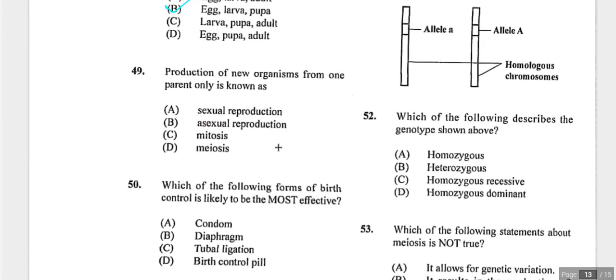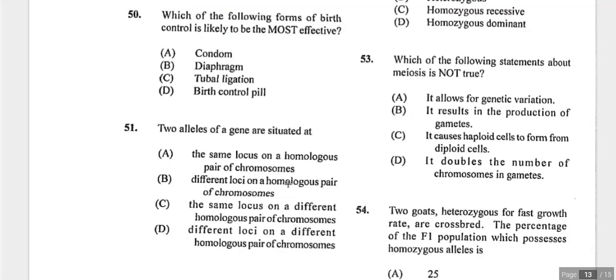Question forty-nine: production of new organisms from one parent is asexual reproduction, facilitated by mitosis. Meiosis is involved in sexual reproduction and the production of gametes. Question fifty asks which contraceptive method is most effective. Tubal ligation is nearly permanent and therefore the most statistically effective, recommended only for those certain they want no more children.